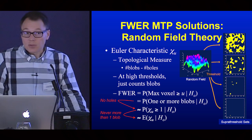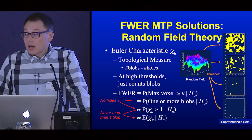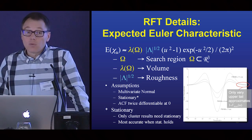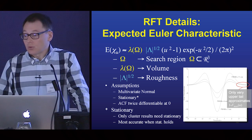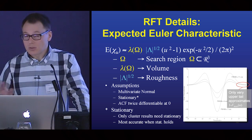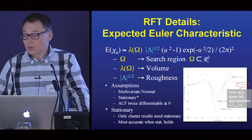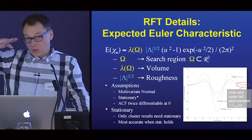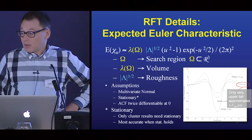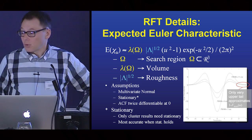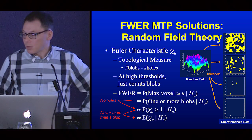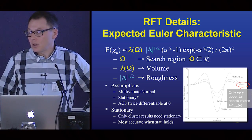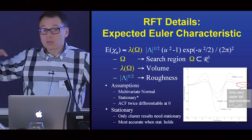That doesn't solve anything on its own — we've replaced one hard problem with another — but it turns out there are really convenient and accurate results for the expected value of an Euler characteristic derived from a random field. The simplest result for Gaussian random fields looks simple: just the volume of the search region times a measure of its roughness, then some function of the threshold. No simulation, no nasty integrals. Here's the plot of the Euler characteristic for all possible thresholds — sometimes it takes on values like negative 15, but we're only using it in the upper tail to approximate the maximum distribution.